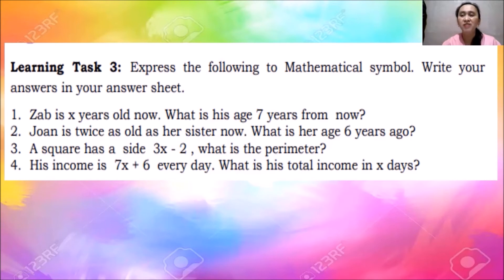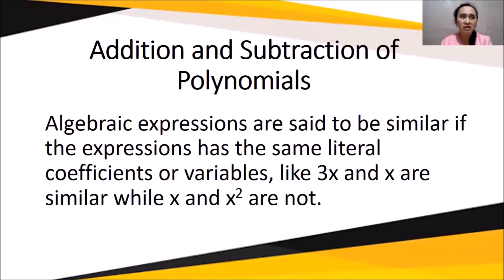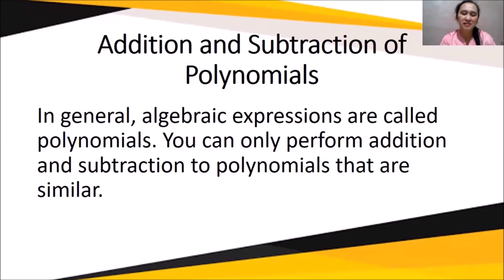Now we will proceed to addition and subtraction of algebraic expressions. Algebraic expressions are said to be similar if they have the same variables and exponents — just like fractions where we need the same denominator. For example, 3x² and x² are similar. But x and x² are not similar because their exponents differ — one has exponent 1 and the other has exponent 2. You can only perform addition and subtraction on polynomials that are similar terms.